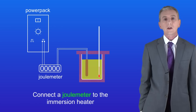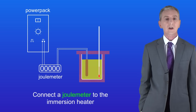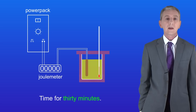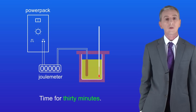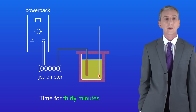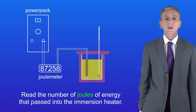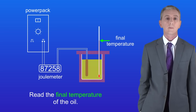We now connect a joulemeter and a power pack to the immersion heater. The joulemeter tells us how many joules of electrical energy pass into the immersion heater. Now we leave the setup for around 30 minutes to allow the temperature to rise enough so we can accurately read on the thermometer. Next we read the total number of joules of energy that passed into the immersion heater and the final temperature of the oil.